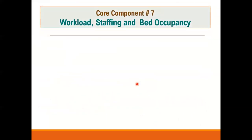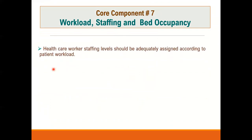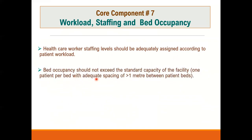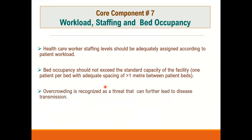Core Component Seven relates to workload, staffing, and bed occupancy. According to WHO, healthcare workers' staffing levels should be adequately assigned according to patient workload. Bed occupancy should not exceed the standard capacity of one patient per bed, with adequate spacing of more than one meter between patient beds. Overcrowding is recognized as a threat that can further lead to disease transmission.